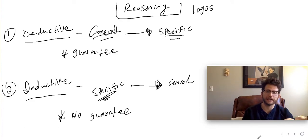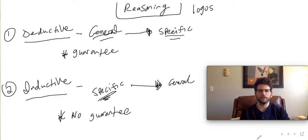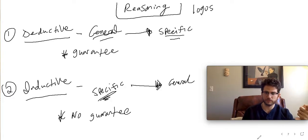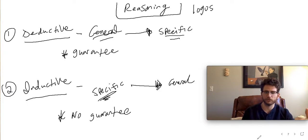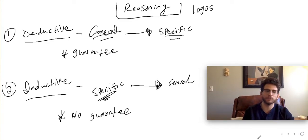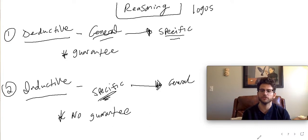We'll talk at the end about logical fallacies — problems with both deductive and inductive arguments — so we know how good and bad ones work. That way, as we're reading arguments, we can be critical of them and make judgments about how they are set up.